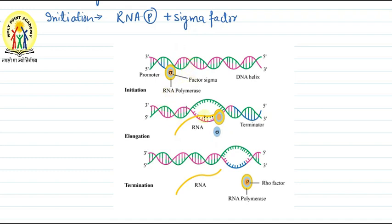So after initiation, we can see RNA polymerase and sigma factor, and here we can see a stretch of RNA that is present. Then comes the second step: elongation.